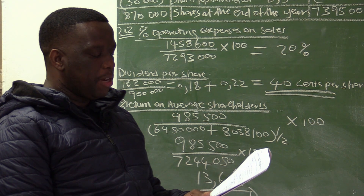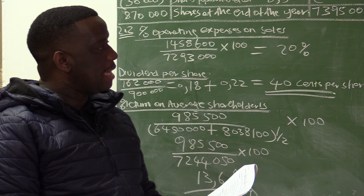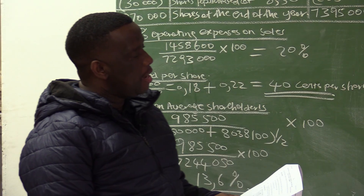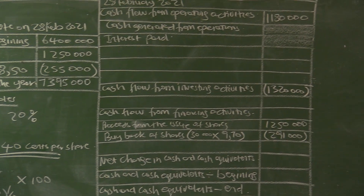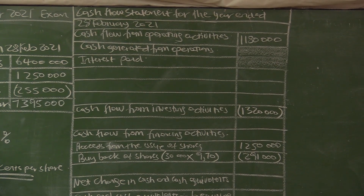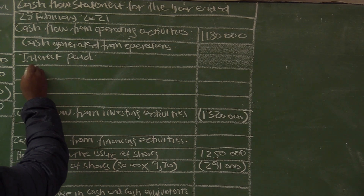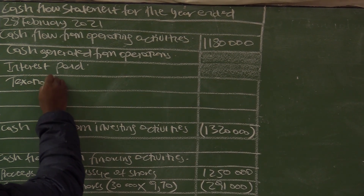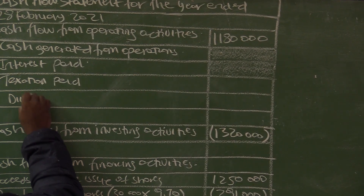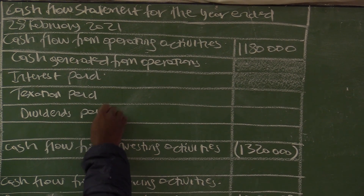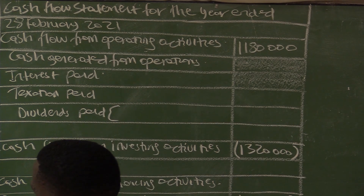Section 2.3: complete the cash flow statement for the year ended 28 February 2021. Certain figures are provided in the answer book. Cash generated from operating activities is provided. Cash generated from operations and interest paid are not required. What is required of us is taxation paid and dividends paid. Let's start with the easy one — dividends paid.